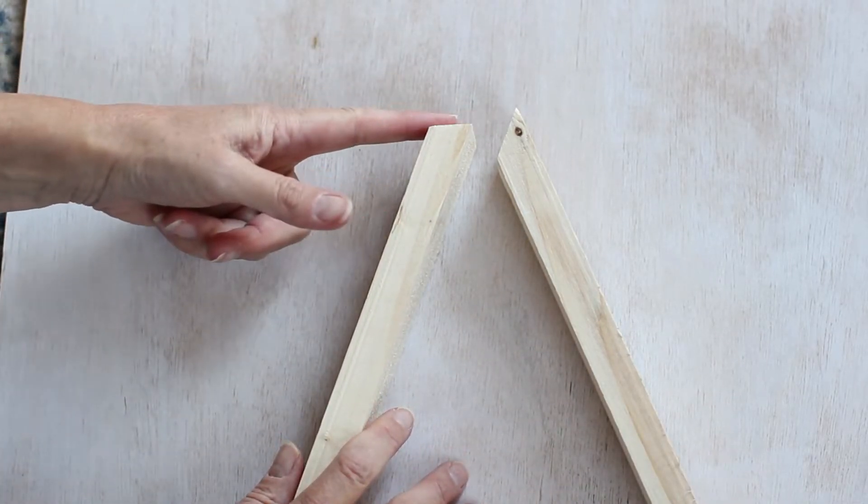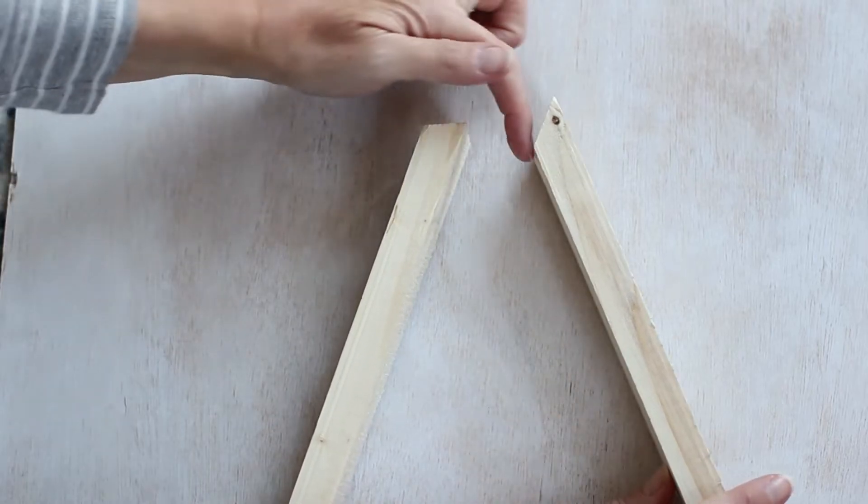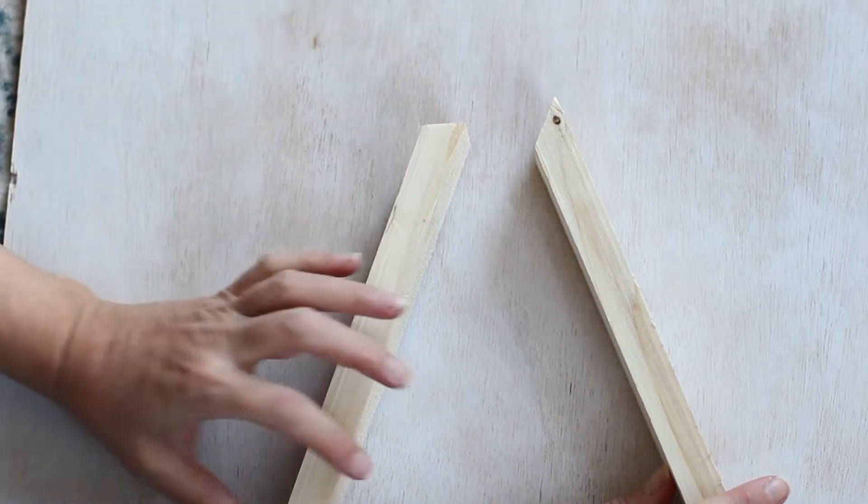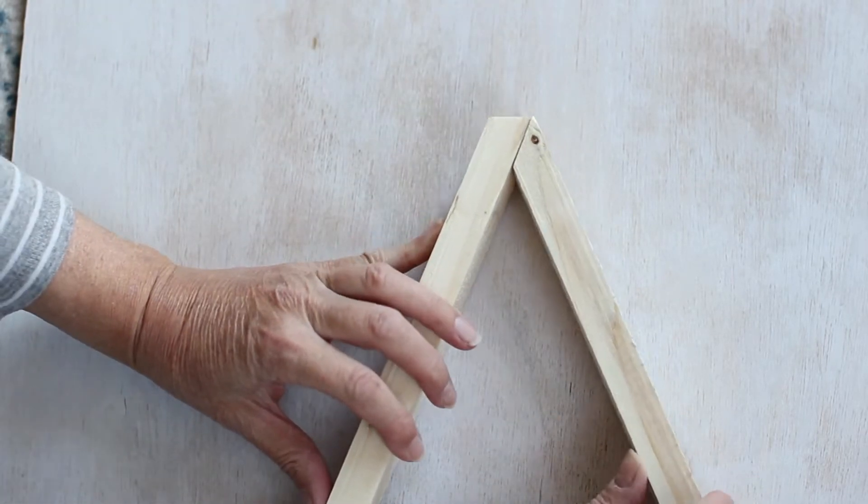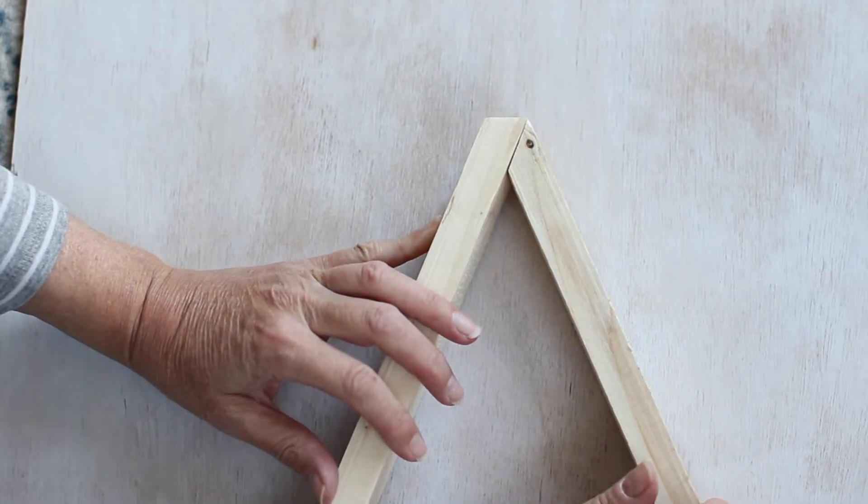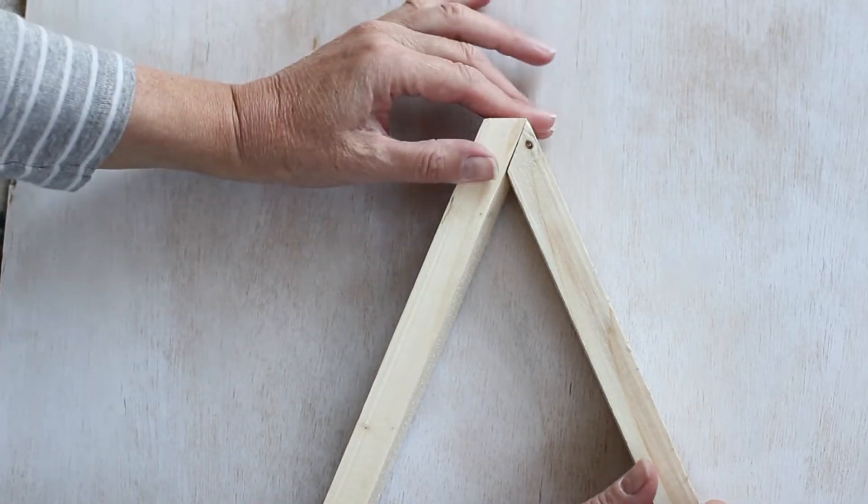I used a mitre saw to cut a 22 and a half degree angle here on this side and 45 degree angle here and this is how they're going to come together and then the top of the triangle is going to be flat.